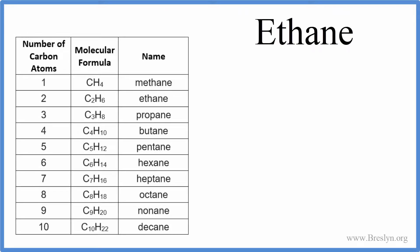To write the formula for ethane, we can look at this chart here. Ethane is what we call a hydrocarbon. It has two carbons and six hydrogens, so it's made up of carbon and hydrogen, and they're all single bonds.